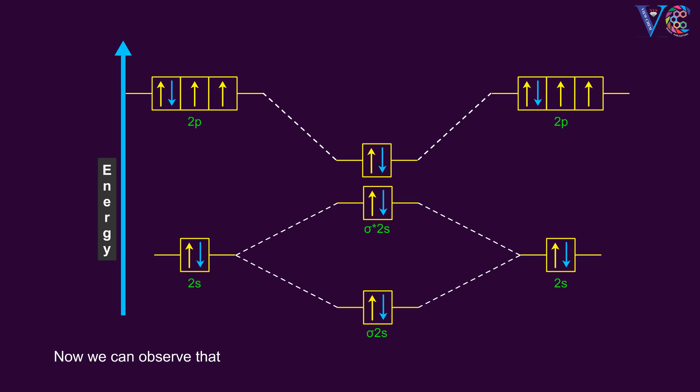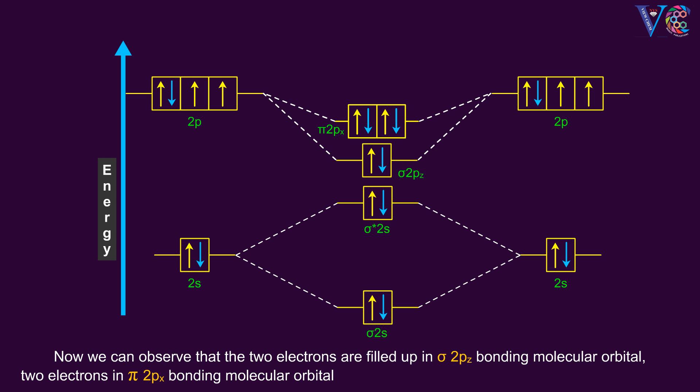Now we can observe that 2 electrons are filled up in σ2pz bonding molecular orbital, 2 electrons in π2px bonding molecular orbital, and 2 electrons in π2py bonding molecular orbital.